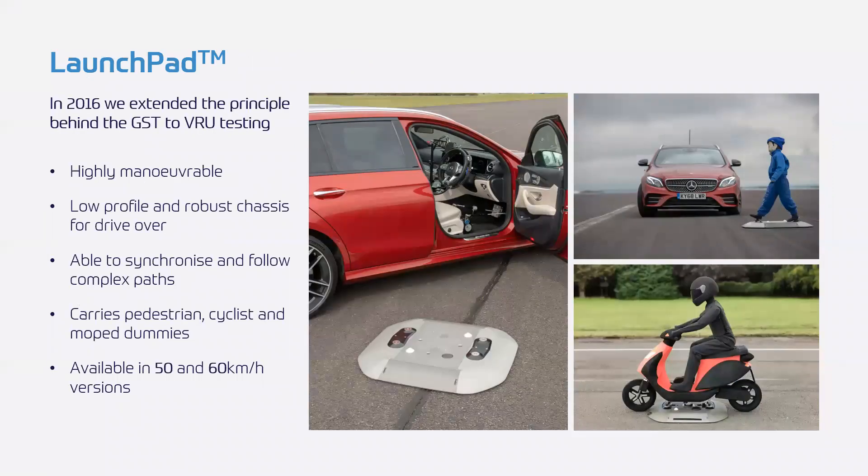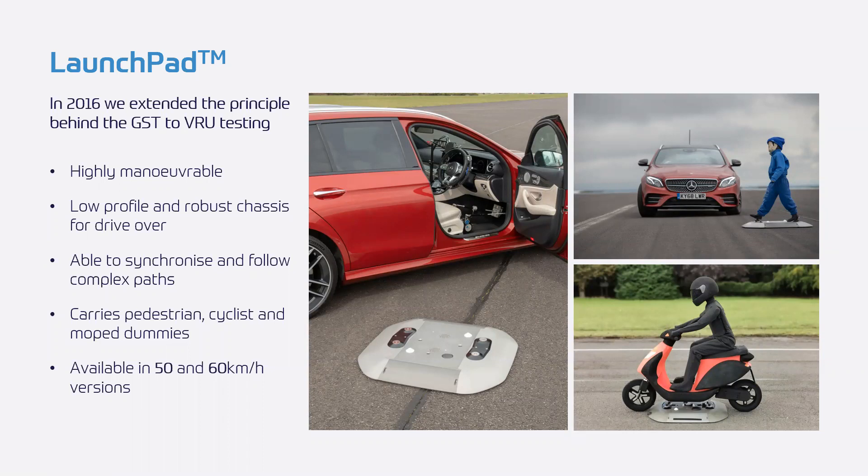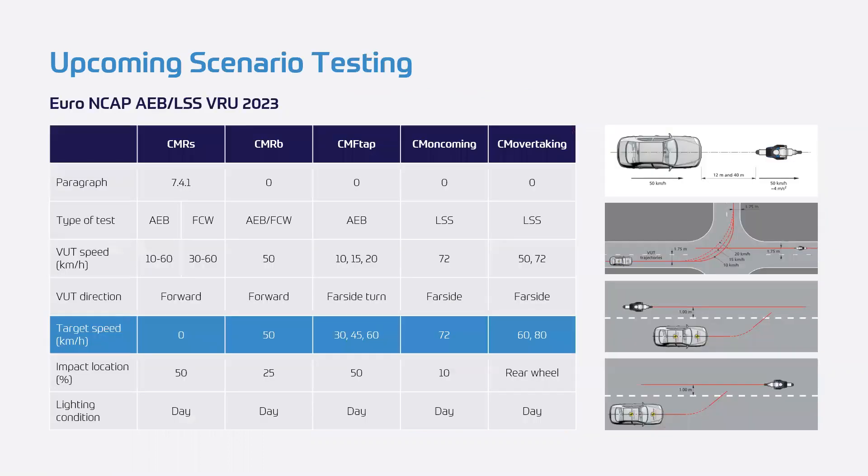So that led us on to the launch pad. Now the original launch pad was inspired by the GST and development started in 2016. The idea was a highly maneuverable low profile platform for VRU targets. We made it so that it could have removable batteries and originally was limited to 50 kph but now offers an upgrade path to 60 kph top speed. This was actually an incredibly successful product and since launch in 2019 we've shipped 90 units worldwide which is quite astounding.